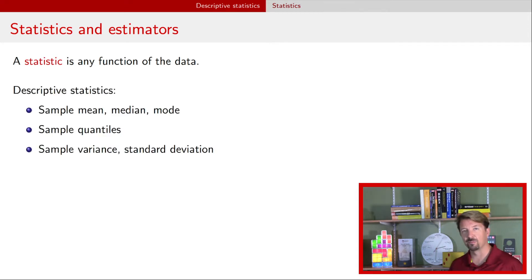All right, so we just talked about a bunch of those. Sample mean, sample median, sample mode, sample quantiles, sample variance, sample standard deviation, are a whole set of examples. And these fall under a category called descriptive statistics. That is, they're in some way describing your data.